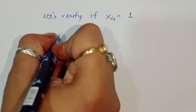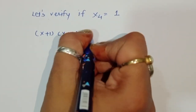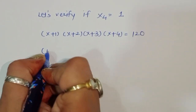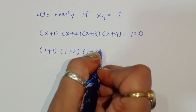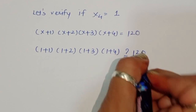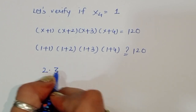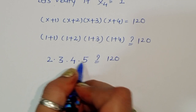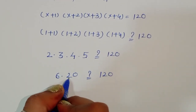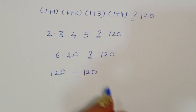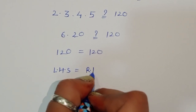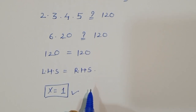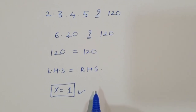Let's verify x = 1: (1+1)(1+2)(1+3)(1+4) = 2 × 3 × 4 × 5 = 120. LHS = RHS, confirmed. So x = 1 is correct. x₃ = -6 is also a real solution, while x₁ and x₂ are imaginary solutions. Thank you.